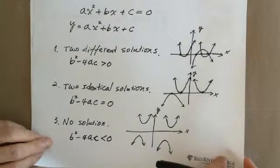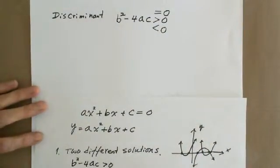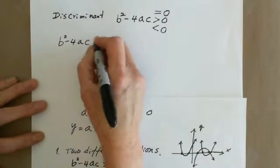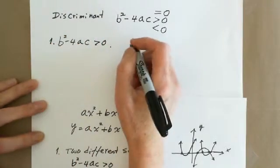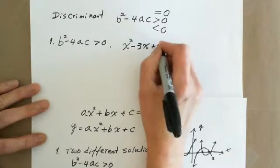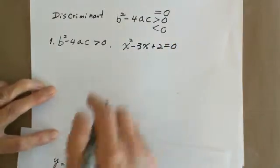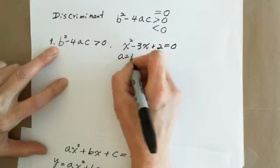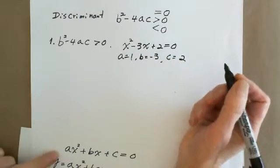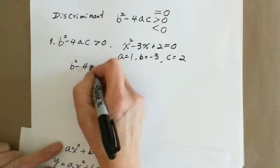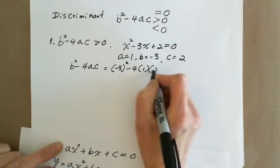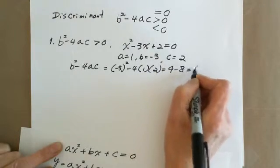Let's look at some examples. For the first situation where b squared minus 4ac is greater than zero, we have two different answers. Take x squared minus 3x plus 2 equals zero. Here a equals 1, b equals negative 3, c equals positive 2. So b squared minus 4ac equals negative 3 squared minus 4 times 1 times 2, which is 9 minus 8, equals 1 — which is greater than zero.